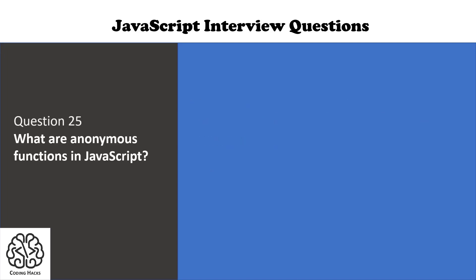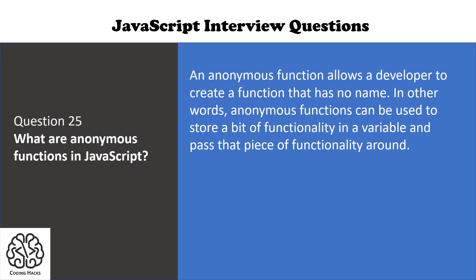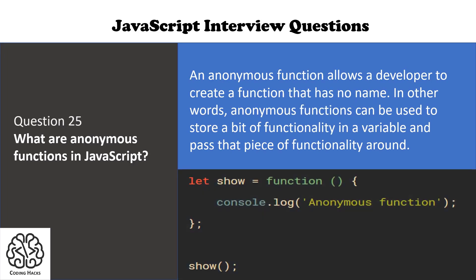The next question is: what are anonymous functions in JavaScript? An anonymous function allows a developer to create a function that has no name. These functions can be used to store a bit of functionality in a variable and pass that piece of functionality around. The syntax of an anonymous function is also shown.